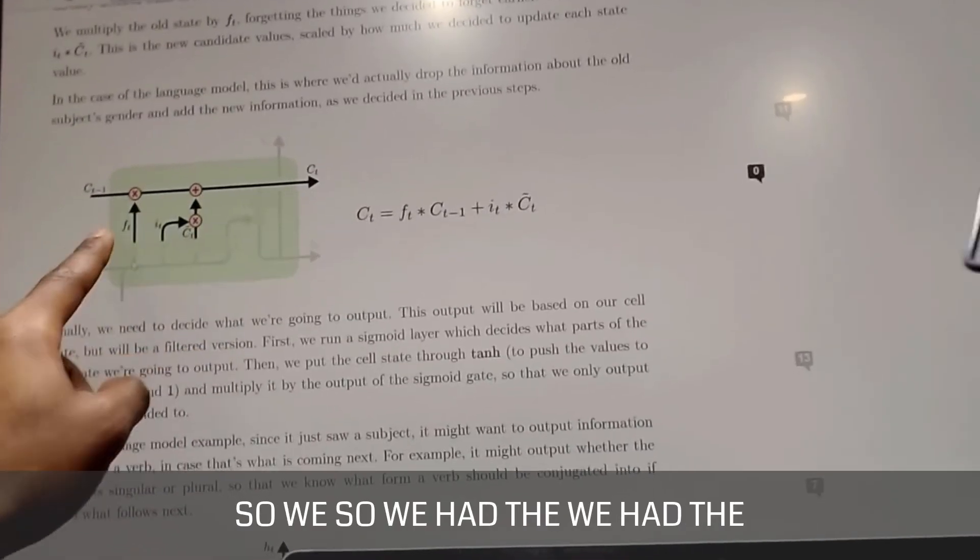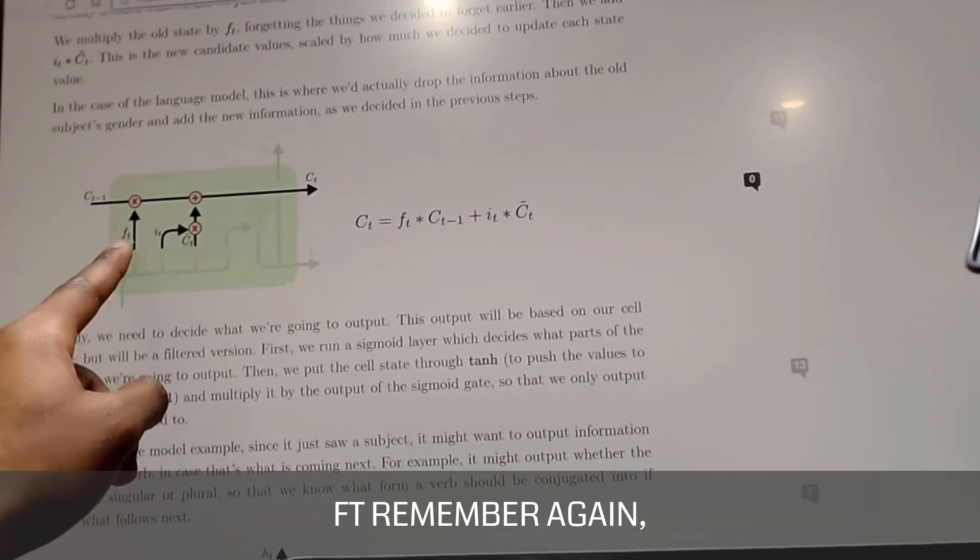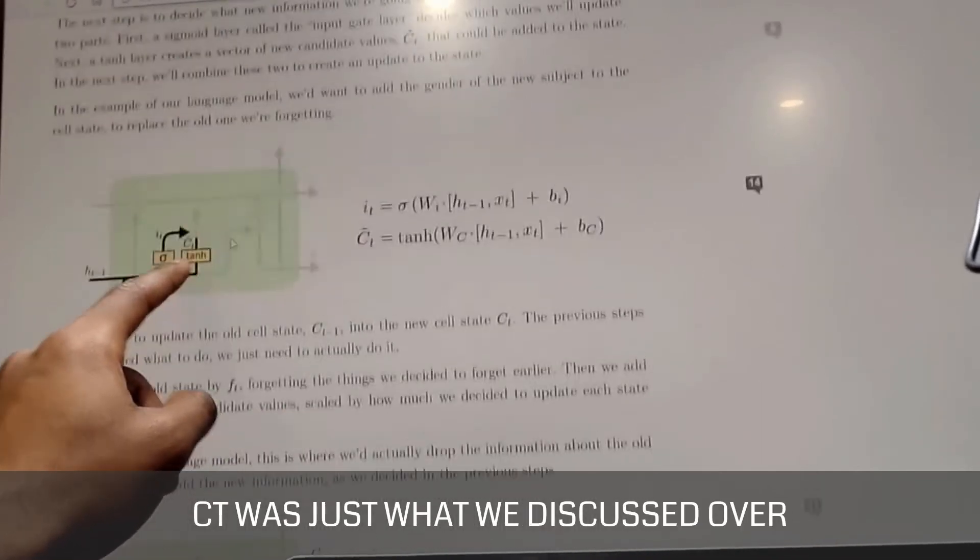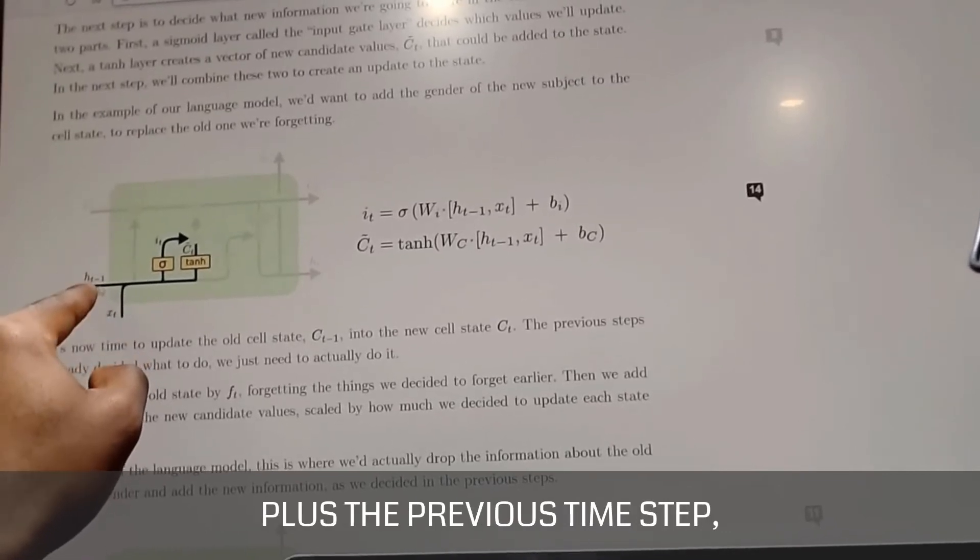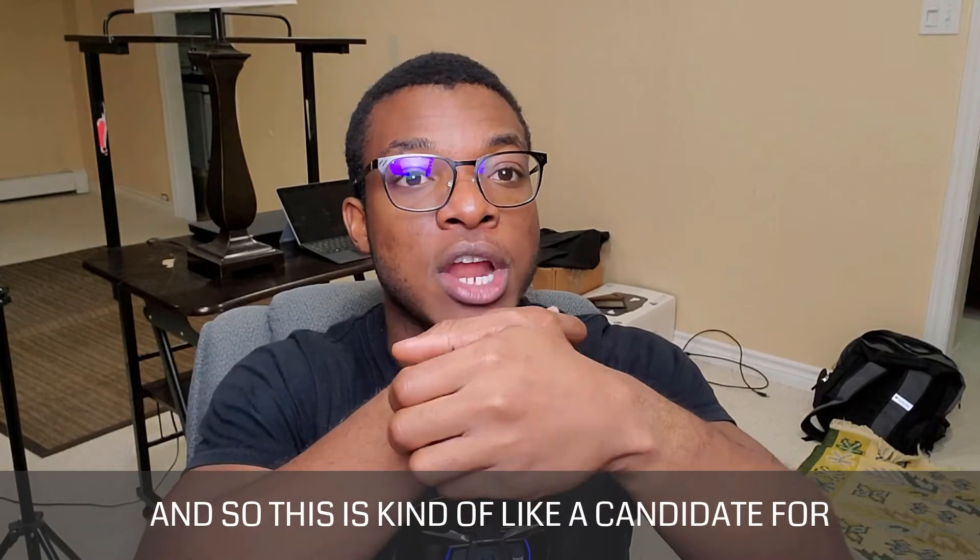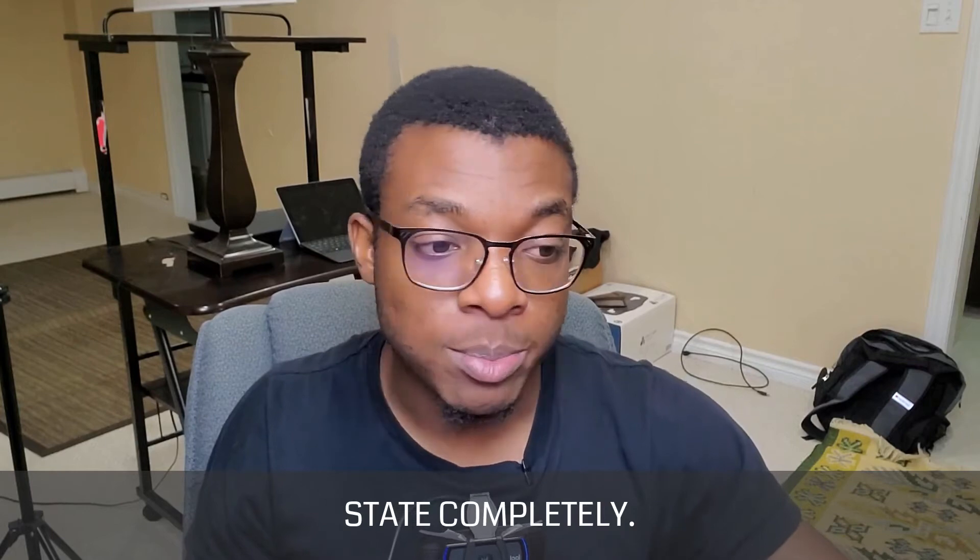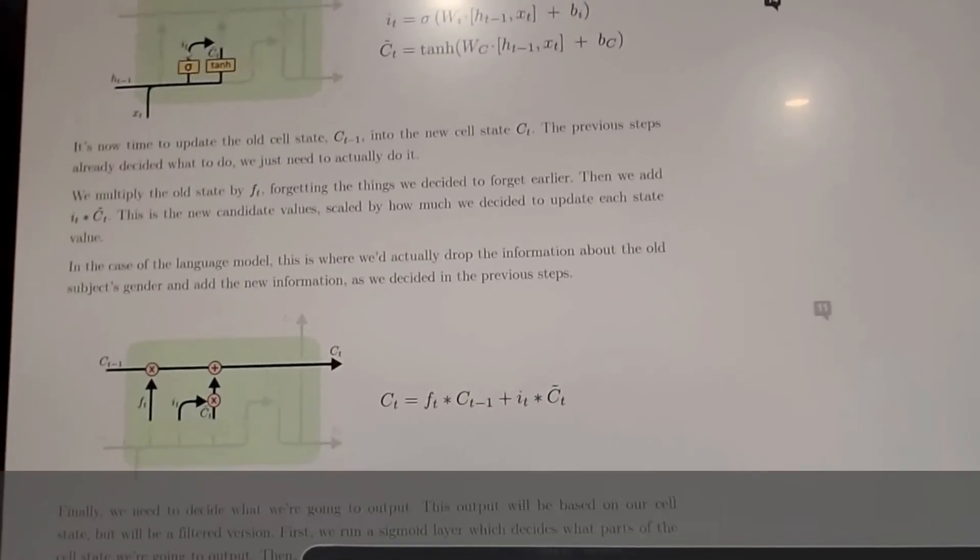So now over here, what we're doing is we have FT. Remember, FT was our forget gate. We have CT—remember, CT was just what we discussed over here, which is the current time step plus the previous time step output that get manipulated together. And so this is kind of like a candidate for what the new cell state should be, but we don't want to overwrite the cell state completely. And so that's why we have I, which just indicates whether or not we should actually go ahead and input that value into the cell state.